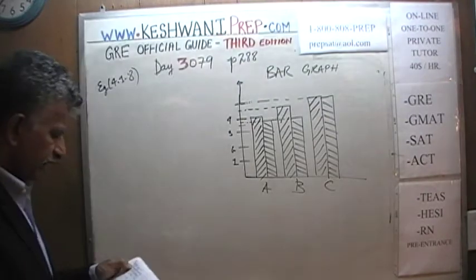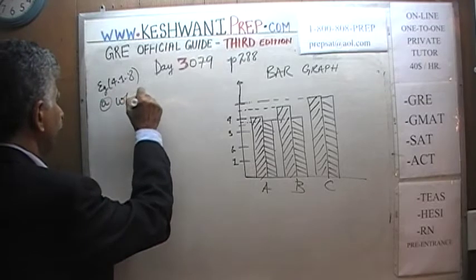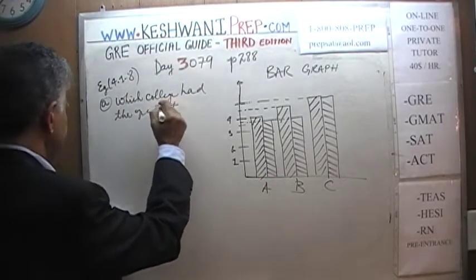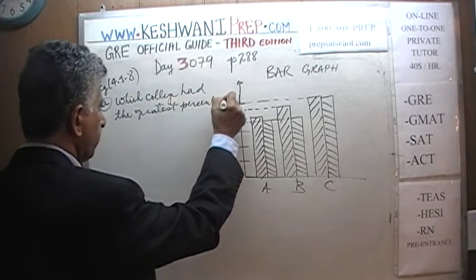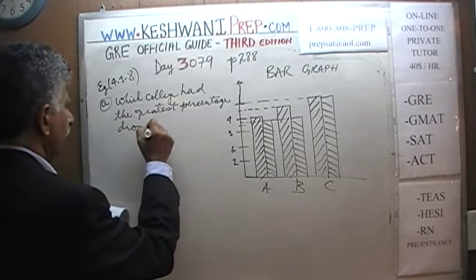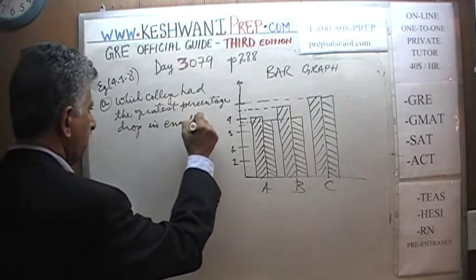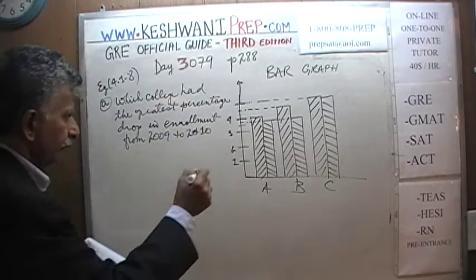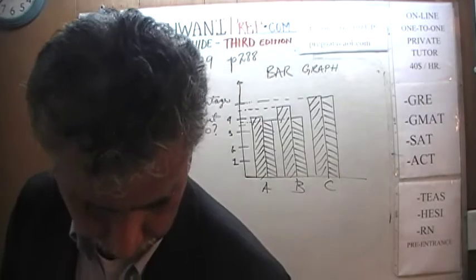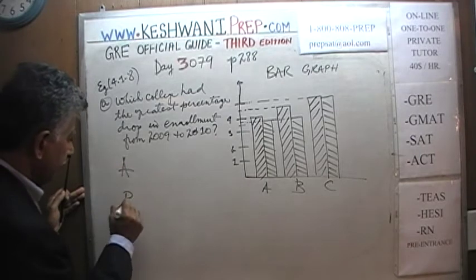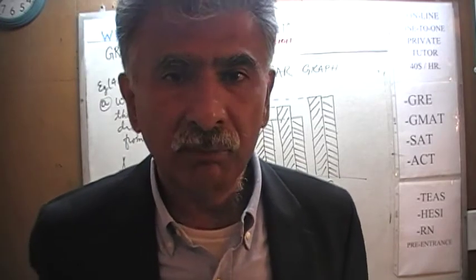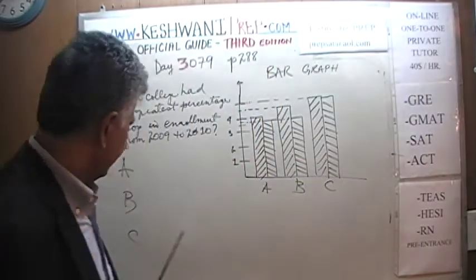Question one: which college had the greatest percentage drop in enrollment from 2009 to 2010? There are only three colleges — A, B, or C. We can clearly rule out C, because it only goes from 5,000 to 4,900 — hardly any drop at all. The percentage drop in C is almost zero. So it's either A or B.